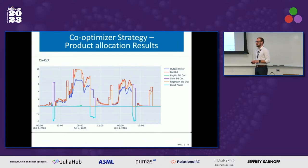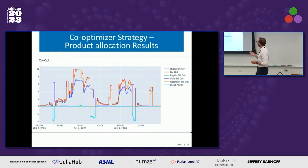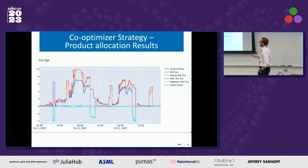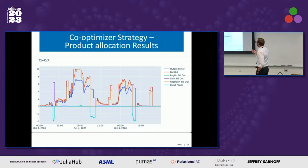Now moving to the co-optimizer — we're working on implementing the ancillary services market, so price results aren't available yet. Here we can see a co-optimizer strategy that allocates ancillary services products too, showing the actual output power and the preference for providing regulation down reserves and a little regulation up. The asset basically prefers to bid on energy and doesn't provide too much spin reserves — it provides spin reserves when it's charging the battery and decides to acquire power.